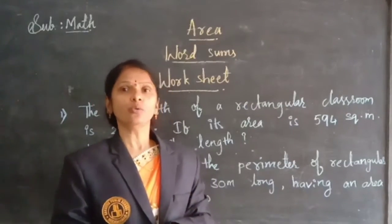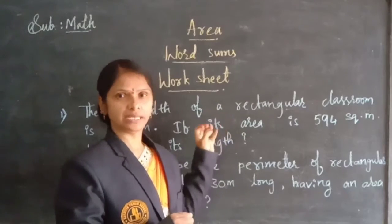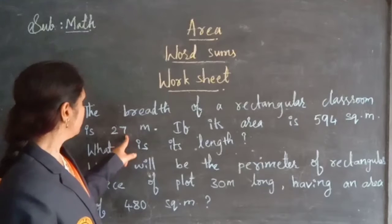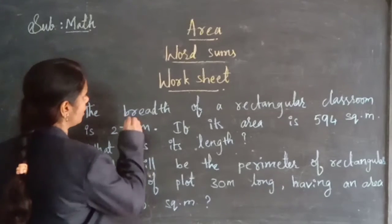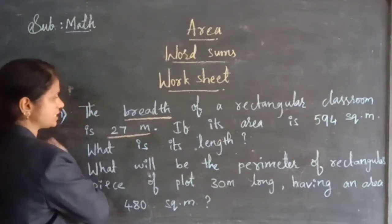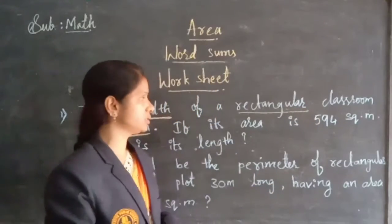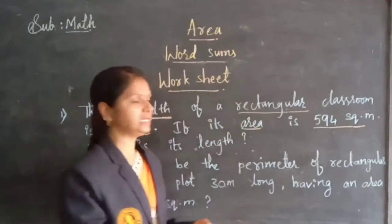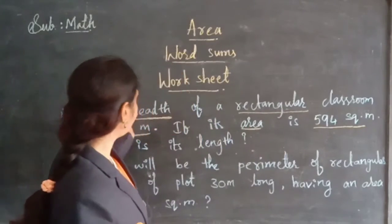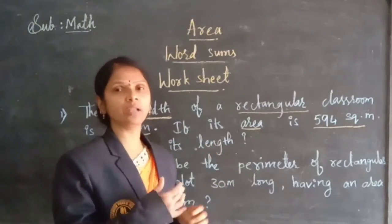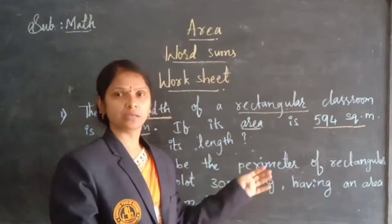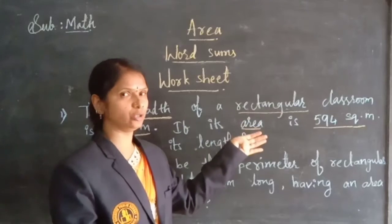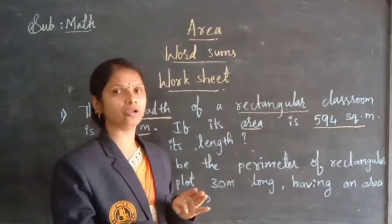I hope you understood these word problems on area. I have given some same-model questions as a worksheet. The breadth of a rectangular classroom is 27 centimeters, the classroom is rectangular, and its area is 594 square meters. You need to find its length. Take the formula L into B, substitute the breadth value, shift, and calculate to get the length.